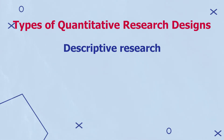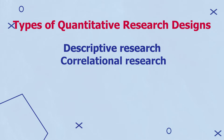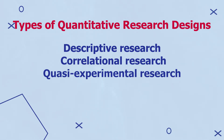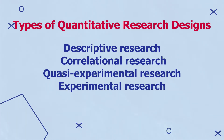There are four main types of quantitative research designs, including descriptive research, correlational research, quasi-experimental research (also known as causal-comparative research), and experimental research.